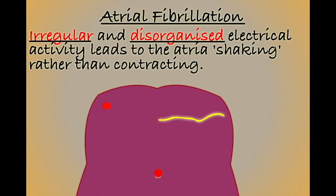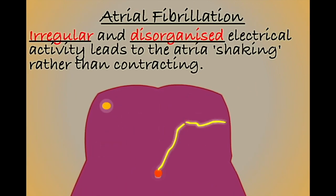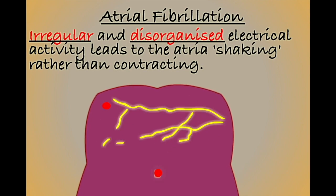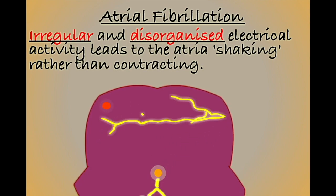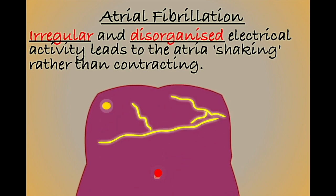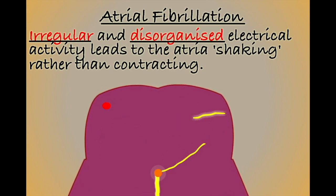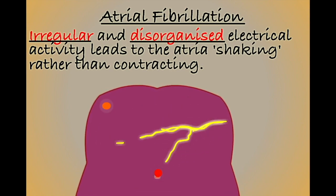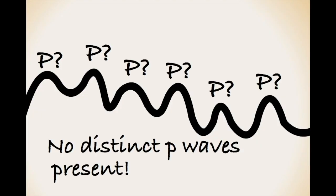In AF, the electrical conduction is more rapid and irregular, flowing through the atria along many different paths, hence the more irregular and bumpy line that we see on our ECG.